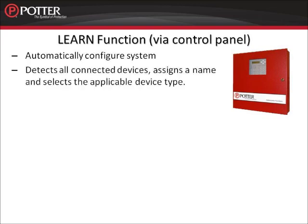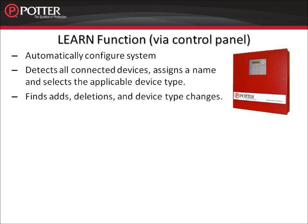The LEARN function detects all connected devices, assigns a name, and selects the applicable device type, whether it's a module, a sensor, or a PLINK device. The LEARN function will also determine if there have been any device type changes, such as changing a smoke to a heat detector. It will also determine if there have been any devices removed from the system. If running the LEARN function after the initial startup to add or remove devices, no existing programming is lost.